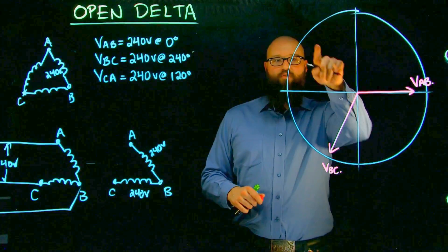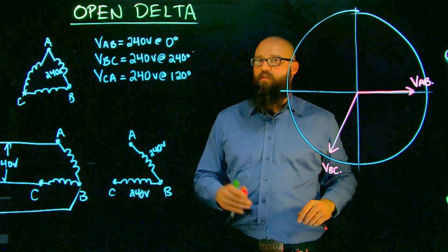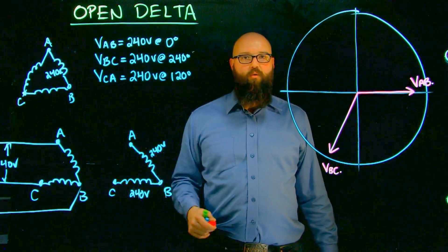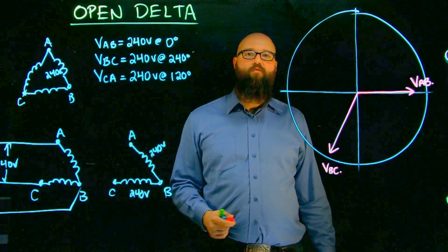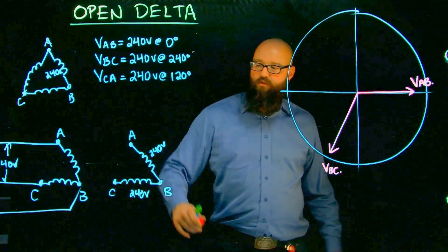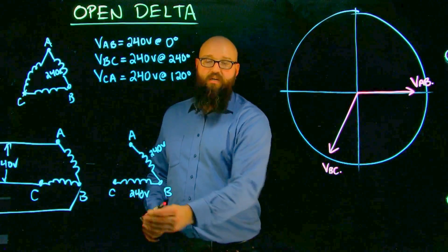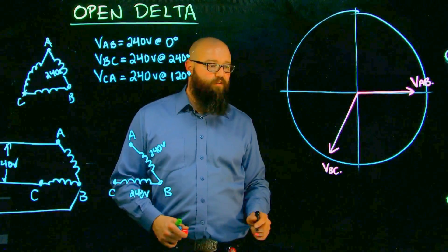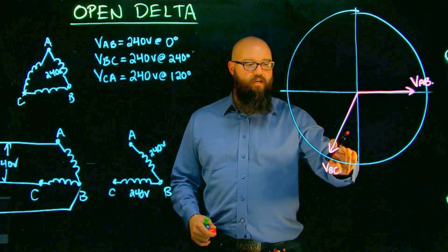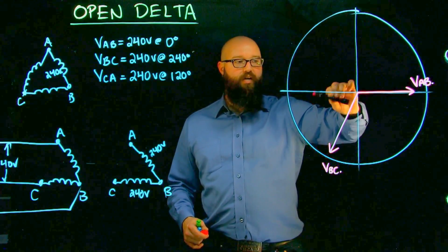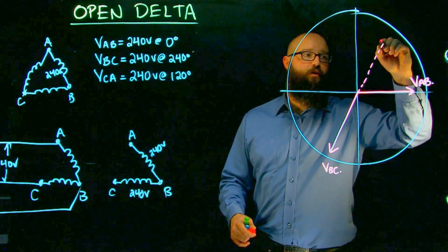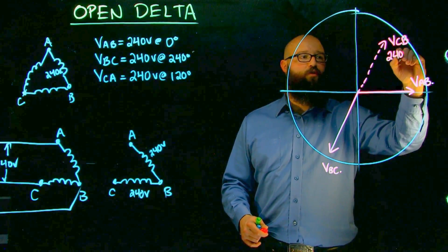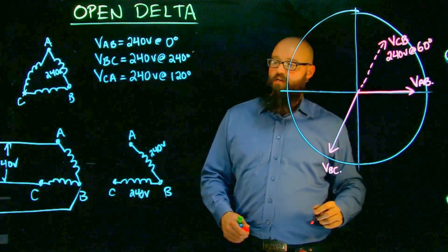V C to A, though, this one is gone. Now, is it truly gone? Let's find out. If I wanted to measure C to A, I don't have a coil there anymore, but what I can do is backtrack through my transformer to prove that that voltage is still there. If I go from C to B, that is the opposite of B to C. When I say the opposite, we're talking about 180 degrees difference. If V B to C is at 240 degrees, well, 180 degrees from that, we have V C to B, which is 240 volts at now 60 degrees.